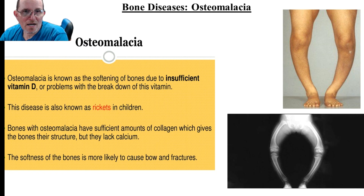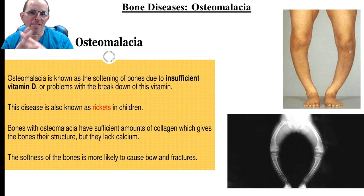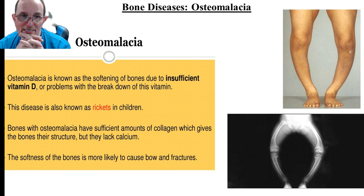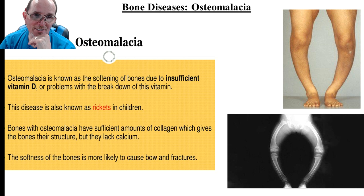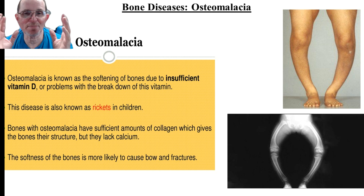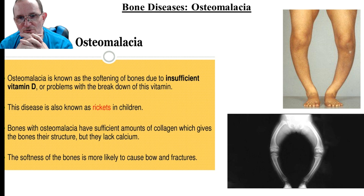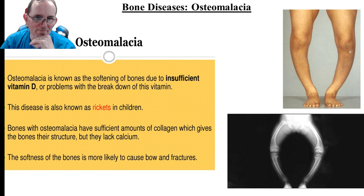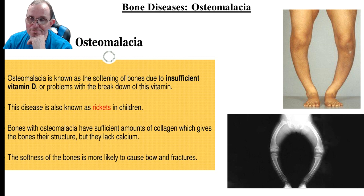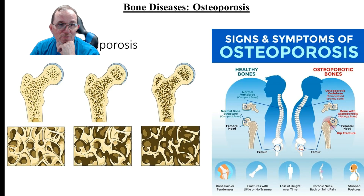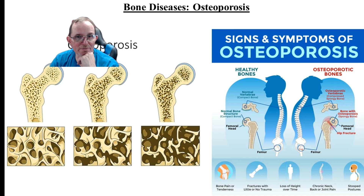Bone diseases: osteomalacia — in adults — and rickets in children. What happens is there's too little calcium, either from insufficient calcium intake or not having enough vitamin D to absorb it. The osteoblasts lay down their collagen but there's not enough calcium, so the bone isn't coated with enough hard crystals. You get bowing of the bones, and with weird angles, the weight bearing may cause fractures. This can be treated with calcium or vitamin D supplementation.